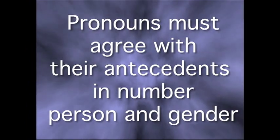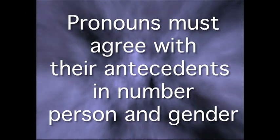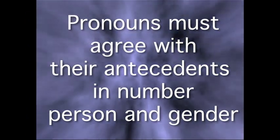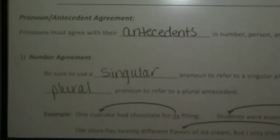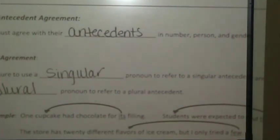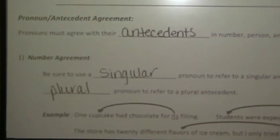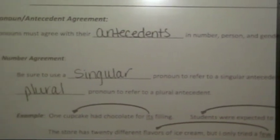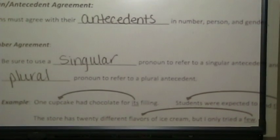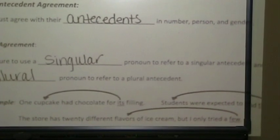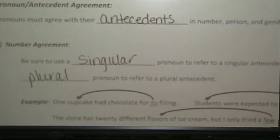Now we're on to the next section. Pronouns must agree with their antecedents in number, person, and gender. Let's talk about number agreement first. Be sure to use singular pronouns to refer to a singular antecedent and a plural pronoun to refer to a plural antecedent. Look at the examples: one cupcake had chocolate for its filling — its is singular, so is one cupcake. Students were expected to end their conversations — their is plural, along with students.